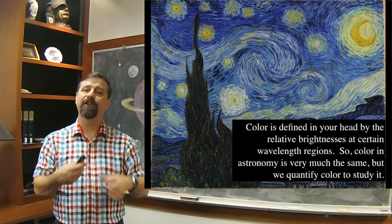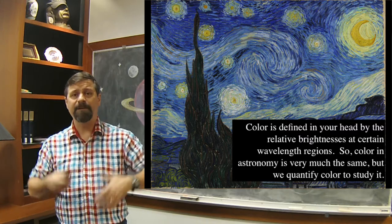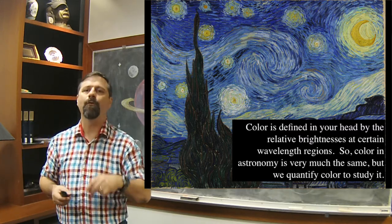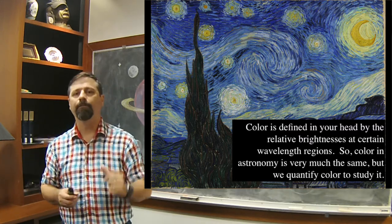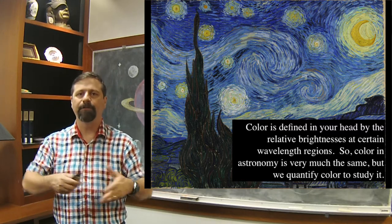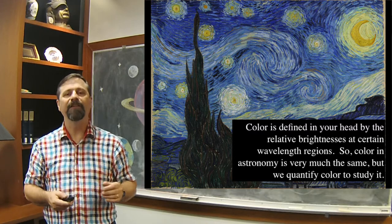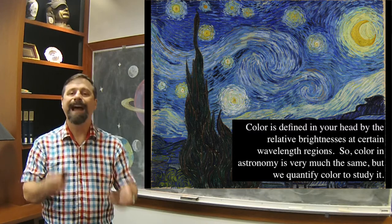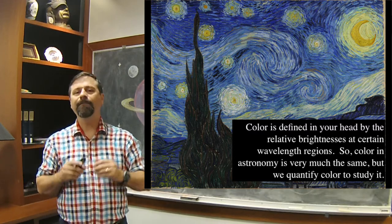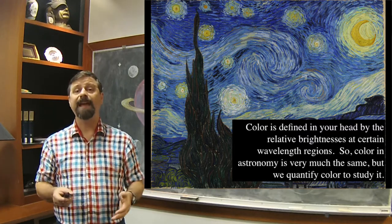Let's look at how color relates to temperature. Color is a funny thing — what is color? I'm wearing a little checkered red, white, and blue shirt. How do you know what I'm wearing? How do I know what color is? Well, color is a funny thing because it's defined inside your head. Color is actually a concept of relative brightness between sets of things that do reception of light.